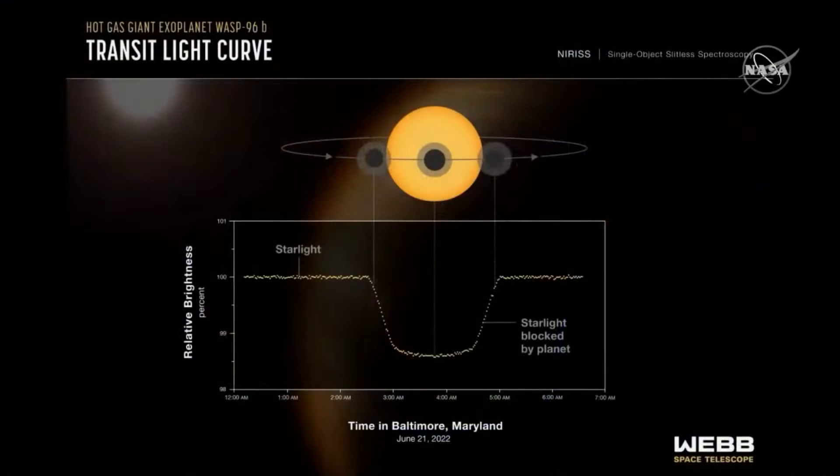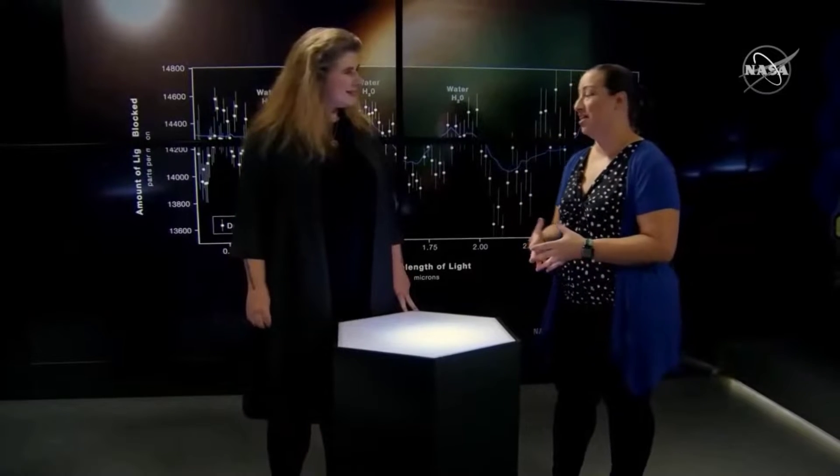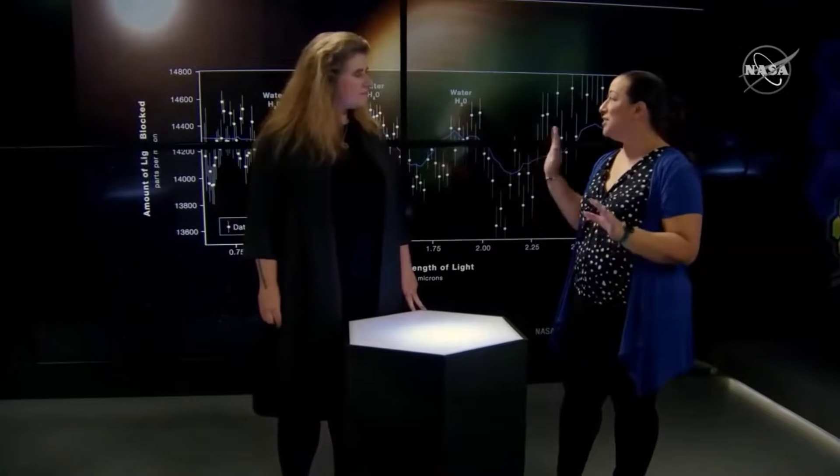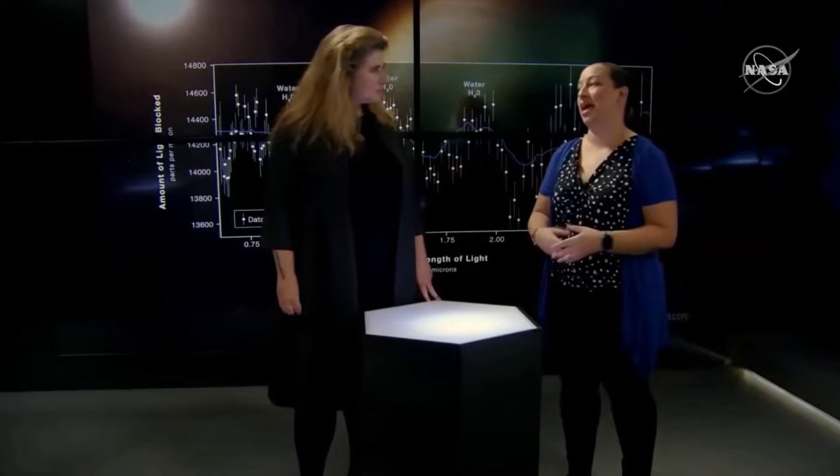You can break that down into wavelengths of light and get what looks like bumps and wiggles to some people, but it's actually full of information. You're seeing bumps and wiggles that indicate the presence of water vapor in the atmosphere of this exoplanet.